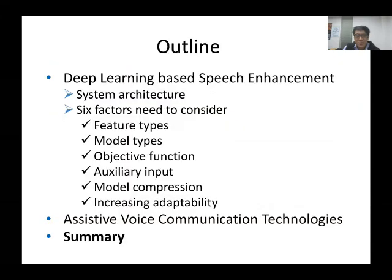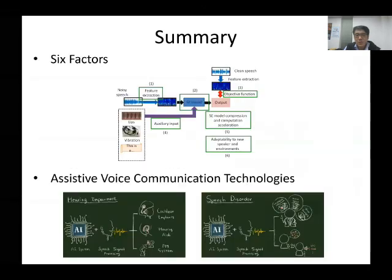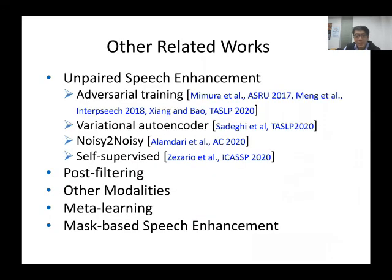Finally, I will summarize this part of the tutorial. We first introduced the architecture of deep learning-based speech enhancement. Then we presented six factors for building speech enhancement systems. Next, two applications were introduced: an assistive listening device (cochlear implant) and an assistive speaking device (disordered speech enhancement). Both are benefited from speech enhancement technologies. There are several related works not covered here, including unpaired speech enhancement, post-filtering, other modalities, meta-learning, and mask-based speech enhancement — all important topics.